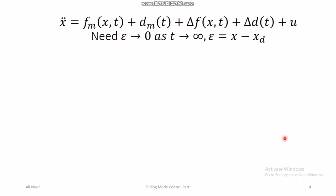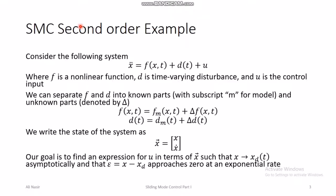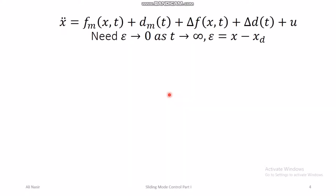If we replace f(x,t) by its components and d(t) with its components, the dynamics become: x double dot equals f_m plus delta f plus d_m plus delta d plus u. We need the error to go to zero as time approaches infinity, where the error is the difference between the actual and desired value of x.